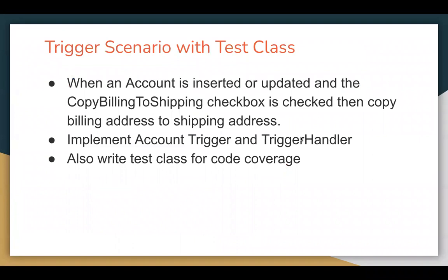Let's understand the scenario first. The scenario says: when an account is inserted or updated and the copy billing to shipping checkbox is checked, then copy billing address to shipping address. The insert part of this requirement I already demonstrated in a previous video. So what we are going to do is understand how that insert method can be reused for update operation as well. I'm going to modify it so that this requirement can be accomplished for both insert and update.